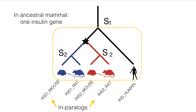As for the in-paralogs, these are genes related by duplication, but importantly, these duplications must have happened within the clade in question. For instance, insulin 1 in mouse and insulin 2 in rat are in-paralogs relative to all mammals, and are therefore in the same HOG at this level.